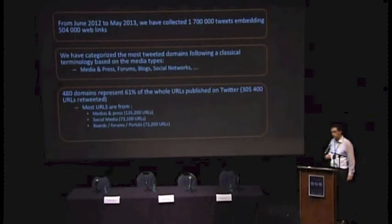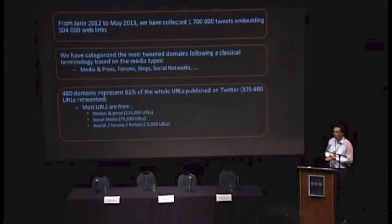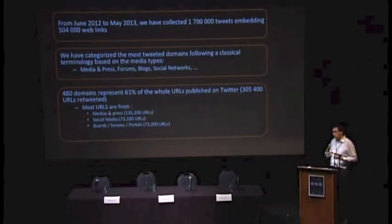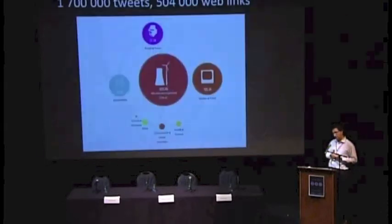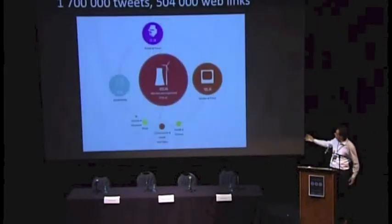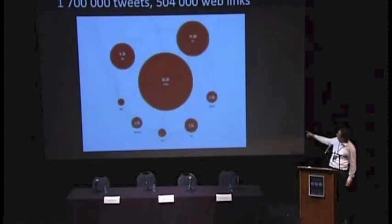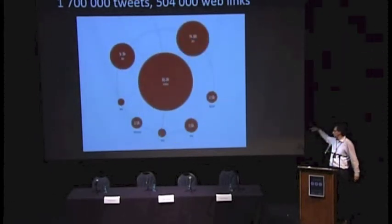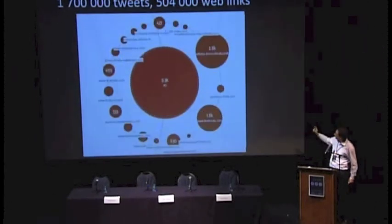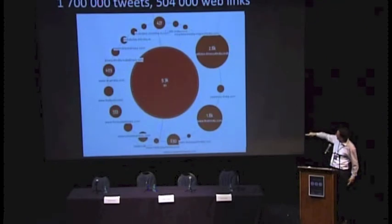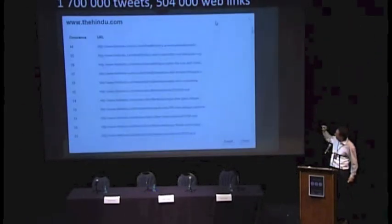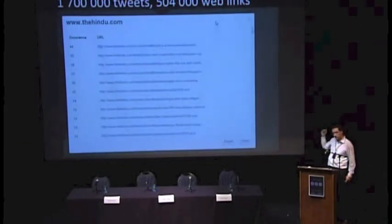Websites are also very important to understand which are the most visible websites and what are the sources of content. We have developed a solution to automatically map websites to a category. You have a snapshot of the solution — you see the share of voice, the breakdown by country, Indonesia and so on. And if you go into India you see all the websites with the occurrence of each site and all the articles and their occurrence inside Twitter.